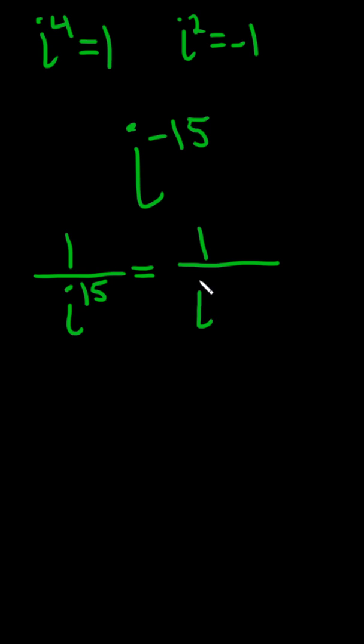We can write this as i to the 12 times i cubed. Let's separate it even further. This is 1 over... Let's write i to the 12 as something with a 4, like this: i to the 4 to the 3, you see, because 3 times 4 is 12.